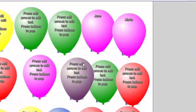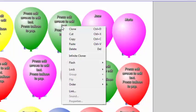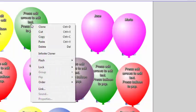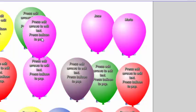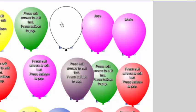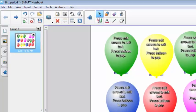If you don't need every balloon, point at a balloon, right-click on it, and left-click delete. If you need more balloons, point at a balloon, right-click on it, and left-click clone, then drag the clone balloon to where you want it to be. When you drag it, it will pop, but just click on it again to restore it, and then click File, Save.